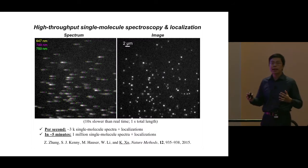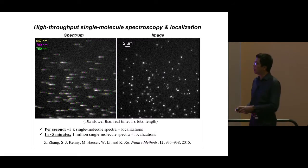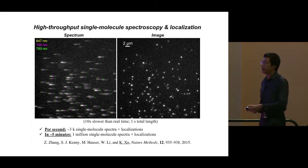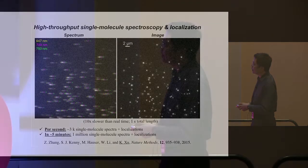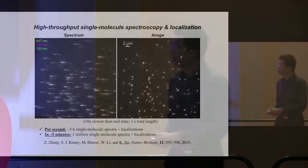Essentially, we make single molecules blink on and off similar to STORM, but instead of just recording positions we disperse each single molecule into its own spectrum in the x-direction, achieving ultra-high throughput single-molecule spectroscopy. In one second we can collect 3,000 single-molecule spectra and localizations, meaning in five minutes we can collect about 1 million single-molecule spectra and localizations. This enabled us to generate a new type of super-resolution image we named spectrally resolved true-color super-resolution microscopy.